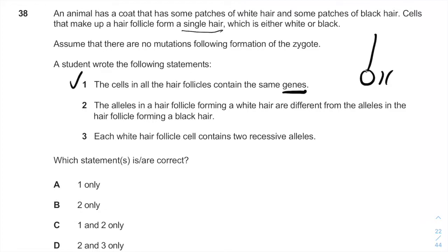The alleles in the hair follicle forming a white hair are different from the alleles in the hair follicle forming a black hair. And as you can see, it asks about the alleles. The alleles are the same alleles, but the question is the expression of those alleles. One allele can be expressed in one cell and the different allele can be expressed in the other cell. So this is not correct.